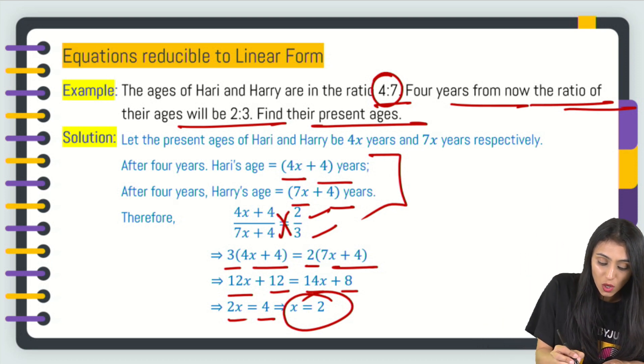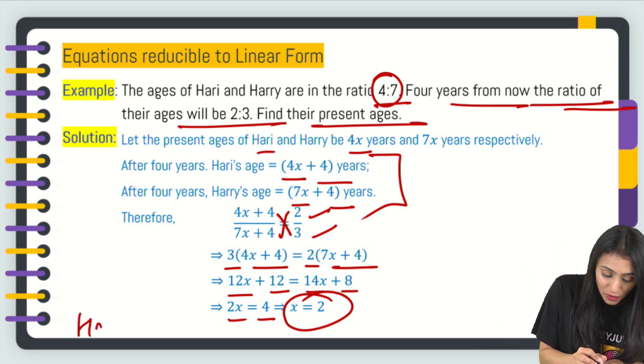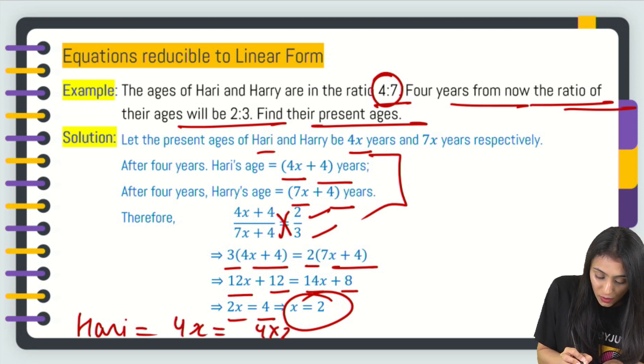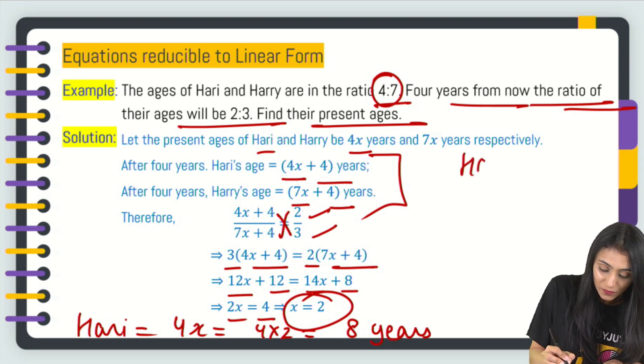But the question is not done yet. We are asked what are the present ages. So if I talk about Hari, that's basically 4x, right? So 4x is going to be 4 times 2. That's going to be 8 years.